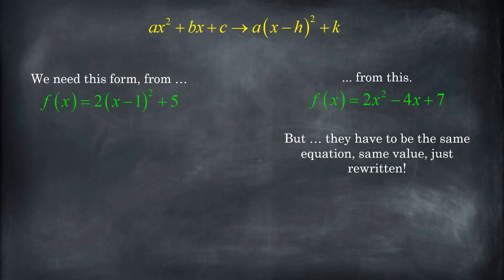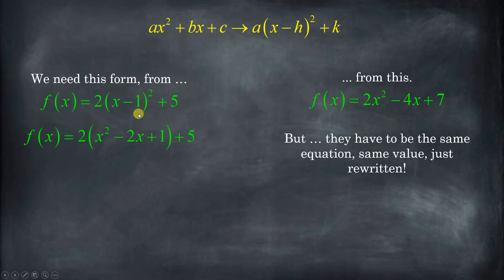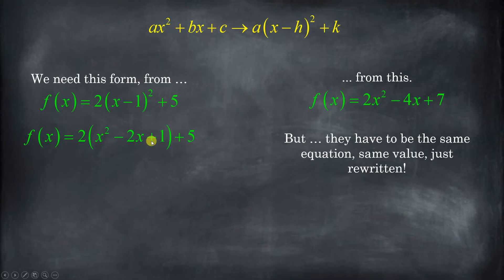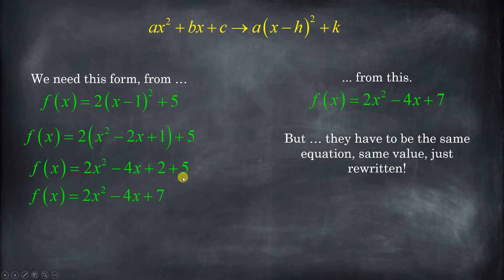Before we get into it, we need to make sure that we understand that this thing right here and this thing over here have to be the same. So I'm going to go ahead and do the order of operations and change this vertex form into standard form to show you that these two things are in fact 100% equal. So x minus 1 squared is x squared minus 2x plus 1. Distribute the 2: 2 times x squared is 2x squared minus 4x plus 2. And 2 plus 5 is 7 — so you see, these two things are exactly the same.